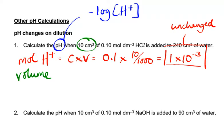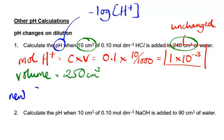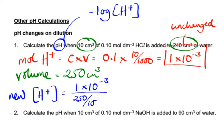The new volume: we had 10 cm³ originally and added 240 cm³, so the new volume is 250 cm³. The new concentration of hydrogen ions is moles ÷ volume = 1 × 10⁻³ ÷ (250/1000) = 4 × 10⁻³. Finally, pH = −log(4 × 10⁻³) = 2.3979, so to 2 decimal places the pH is 2.40.